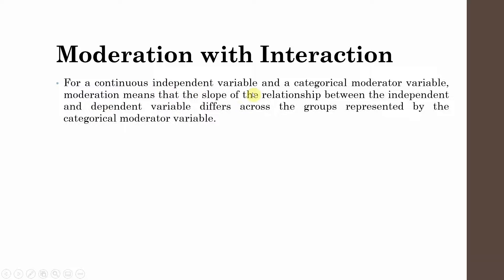For a continuous independent variable and a categorical moderator variable, moderation means that the slope of the relationship between the independent and dependent variable differs across the groups represented by the categorical moderator variable.